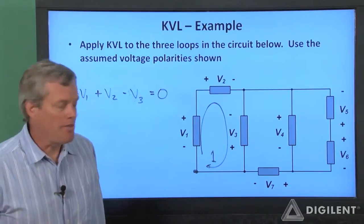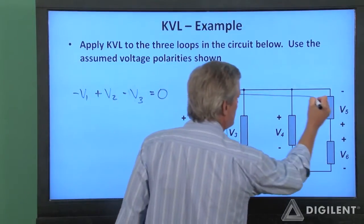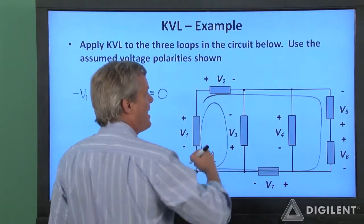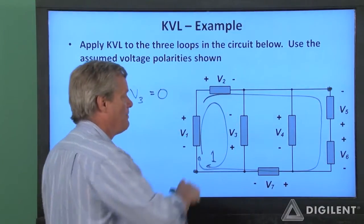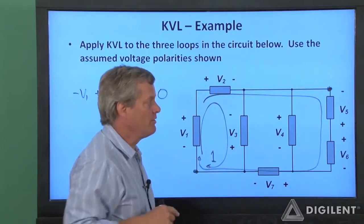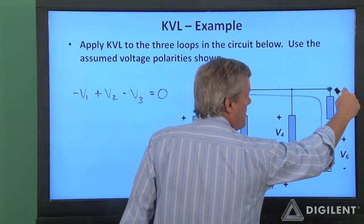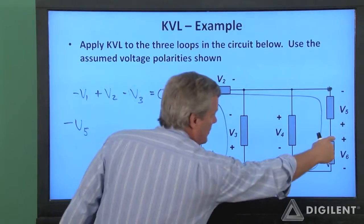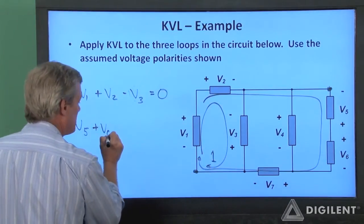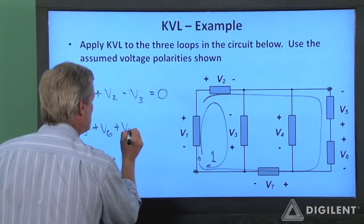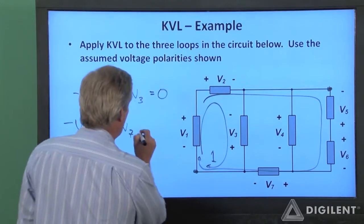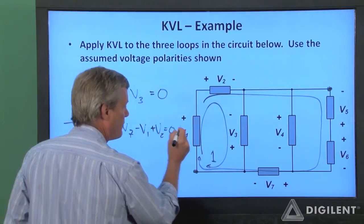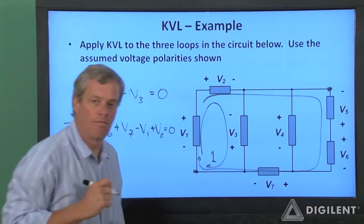The same is true for any other loop in the circuit. For example, let's go all the way around this outer loop here. This time, I think I'll start up here. I'm still going to be going clockwise, although I don't need to, so negative V5 plus V6 plus V7 minus V1 plus V2 brings us back to my starting point, so sum to zero.